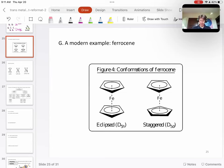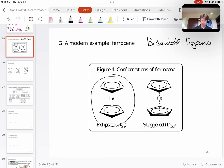Ferrocene is pictured here on this page, and on this page, you'll see ferrocene is going to be a bidentate ligand because it's going to have two bonds to iron in particular.